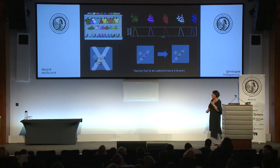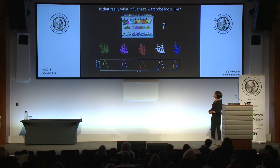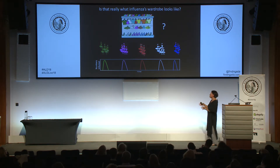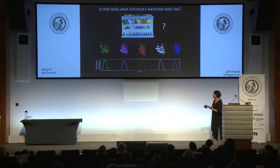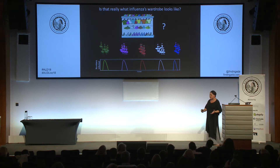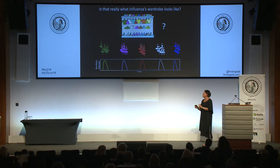Some years ago — about 10 years to be precise — we asked the question: is that really what influenza's wardrobe looks like? The reason we asked that question is because this business of switching from the green outfit to the purple to the red to the white and to the blue, which is what we know influenza does, is kind of difficult to explain if they do have this diverse wardrobe from which they can pick any outfit. A virus doesn't have a brain, so the idea that the whole virus population could actually coordinate and say, 'we've done the green thing, let's now move on to purple,' just doesn't quite make sense.